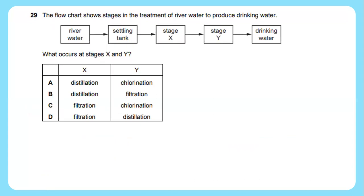Question 29: The flow chart shows stages in the treatment of river water to produce drinking water. They have river water and then it goes to settling tank, then to stage X, stage Y and becomes drinking water. What occurs at stage X and Y? Chlorination is the process of adding chlorine or chlorine compound such as sodium hypochlorite to water before it becomes drinking water. So stage Y will be chlorination. Meanwhile, before the process of chlorination, it must go through the process of filtration. So stage X will be filtration. The answer is C.